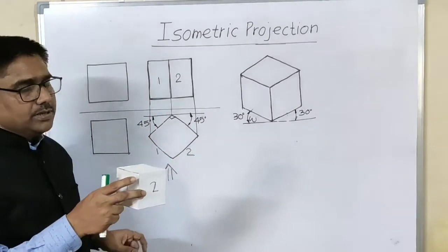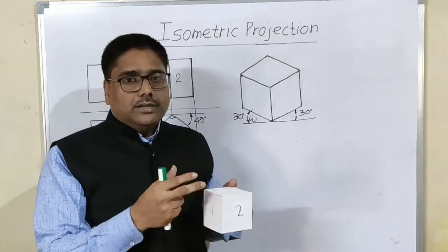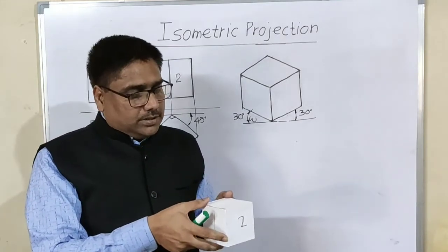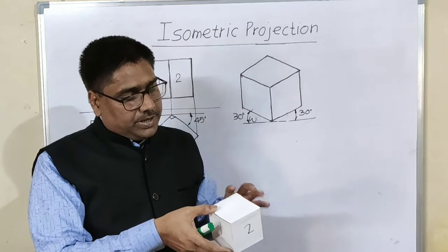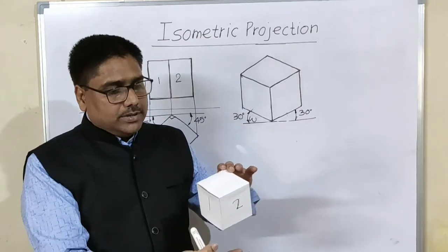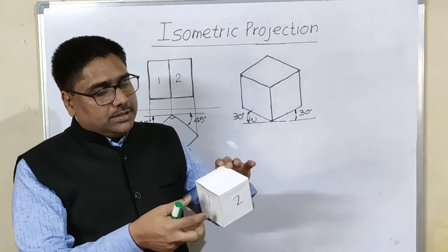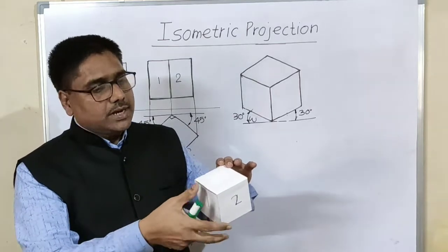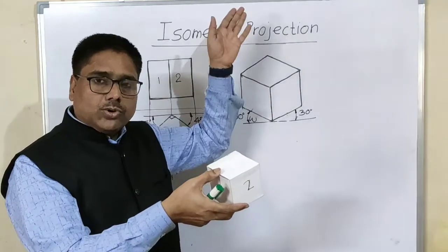Another modification required is give inclination with HP through 30 degrees such that all the three faces are equally visible in a projected view.